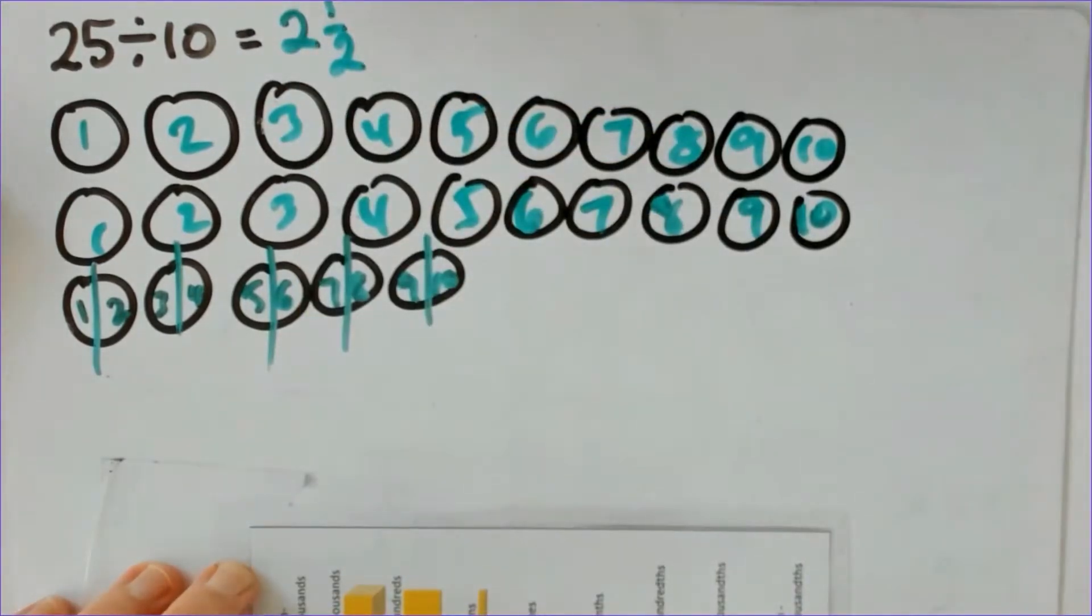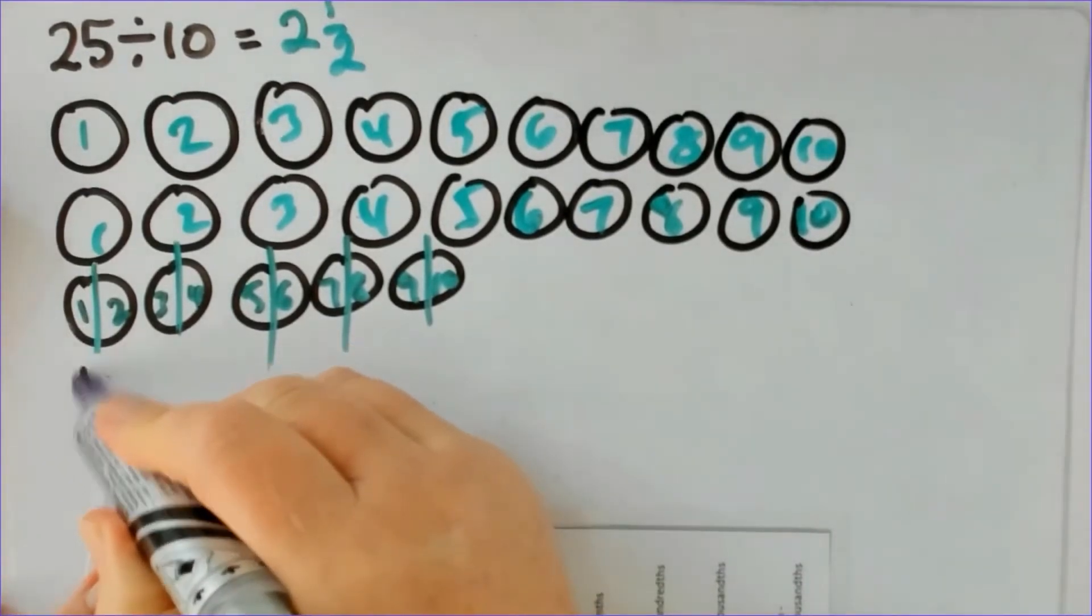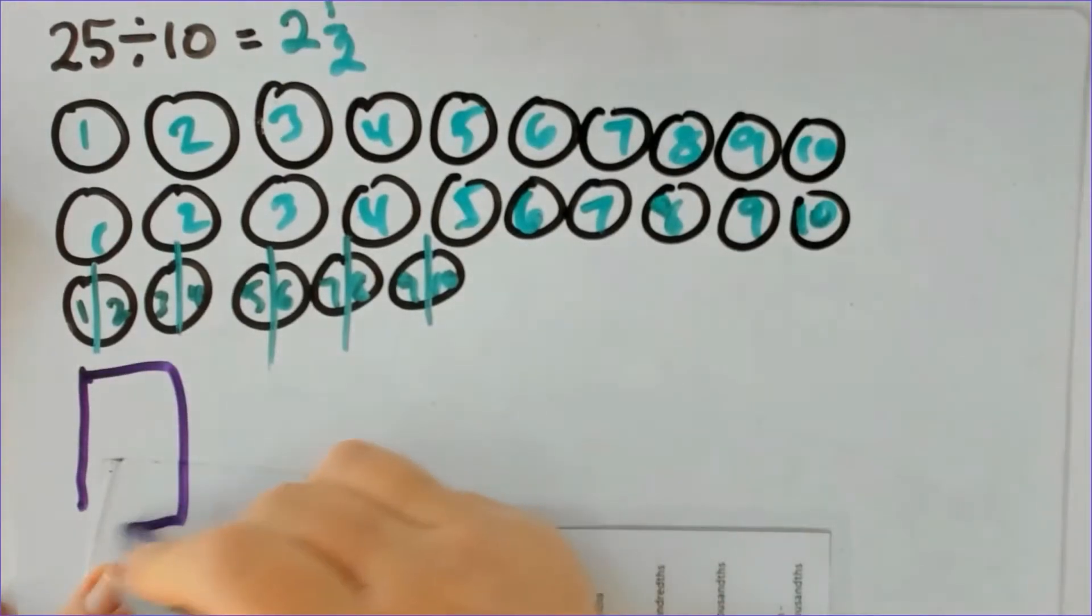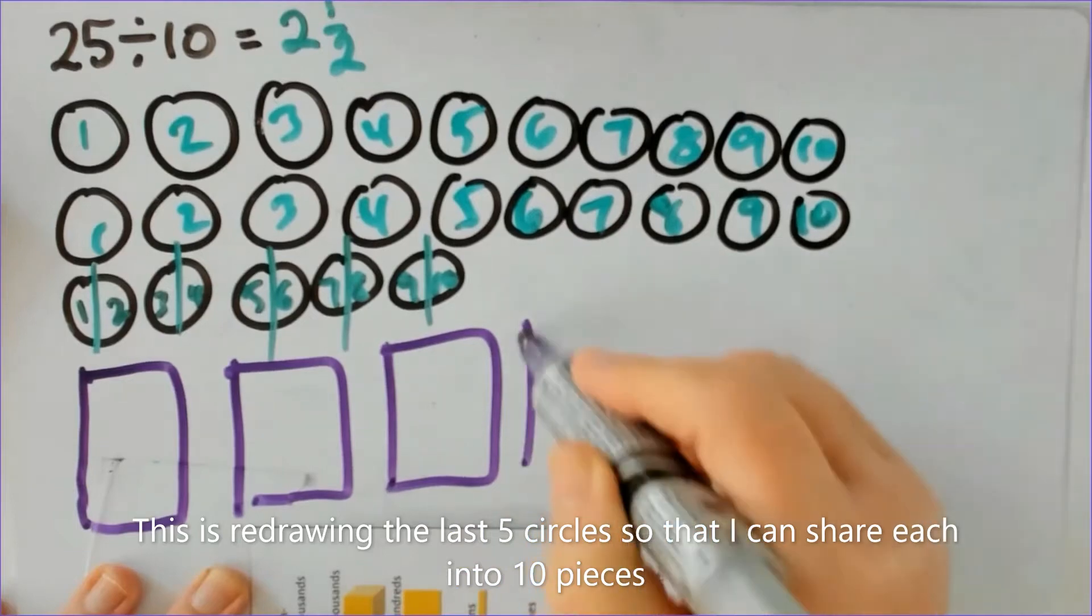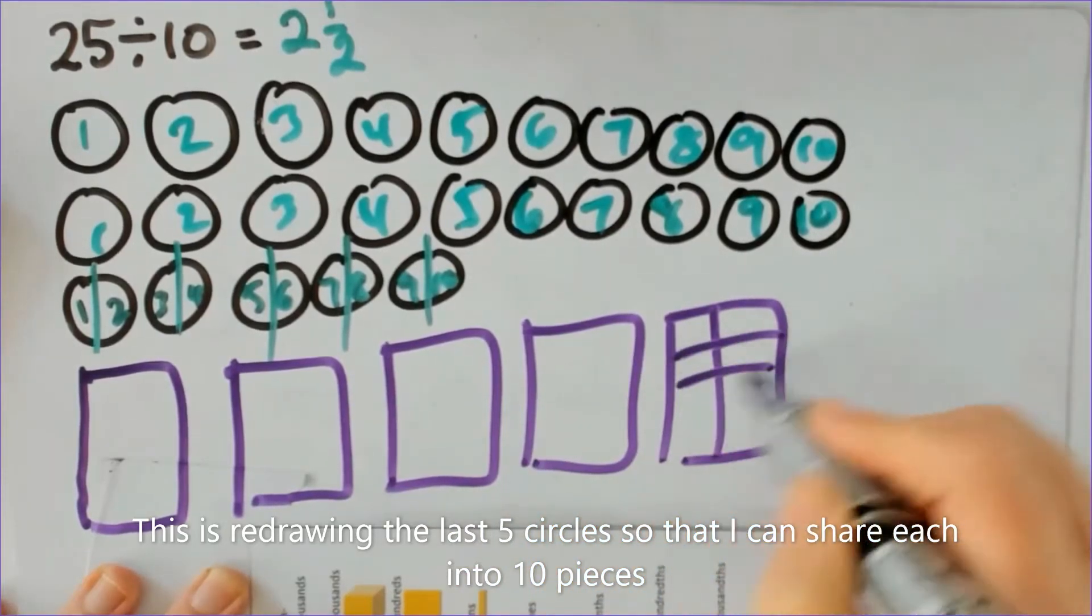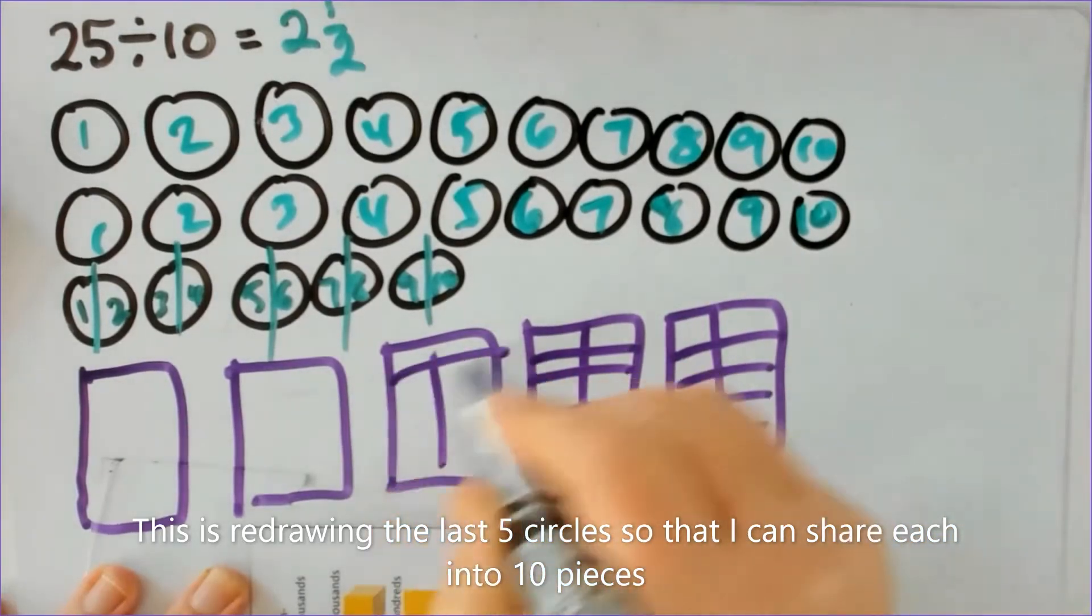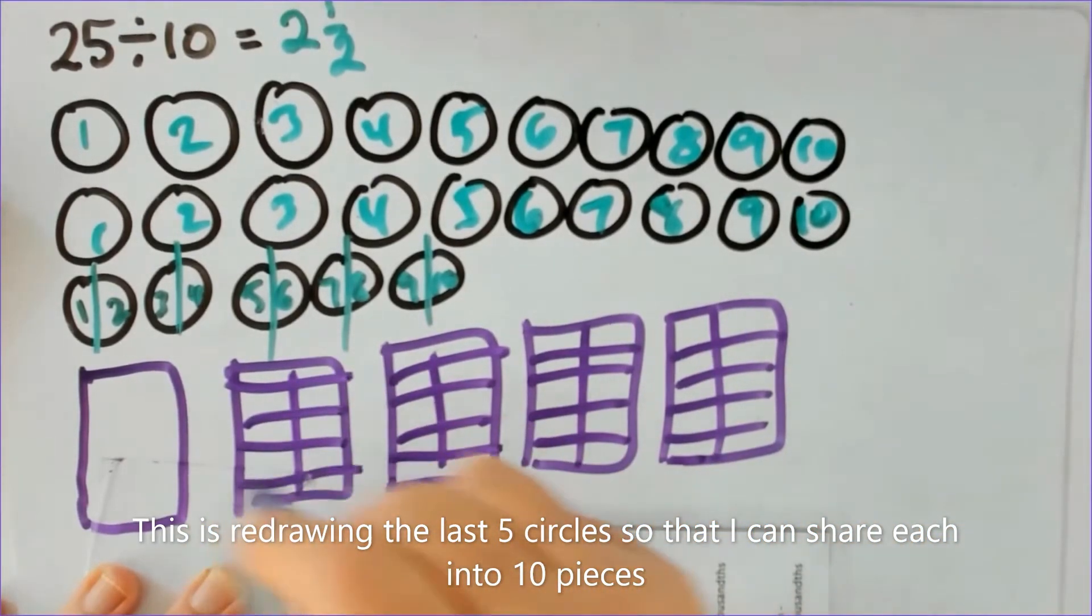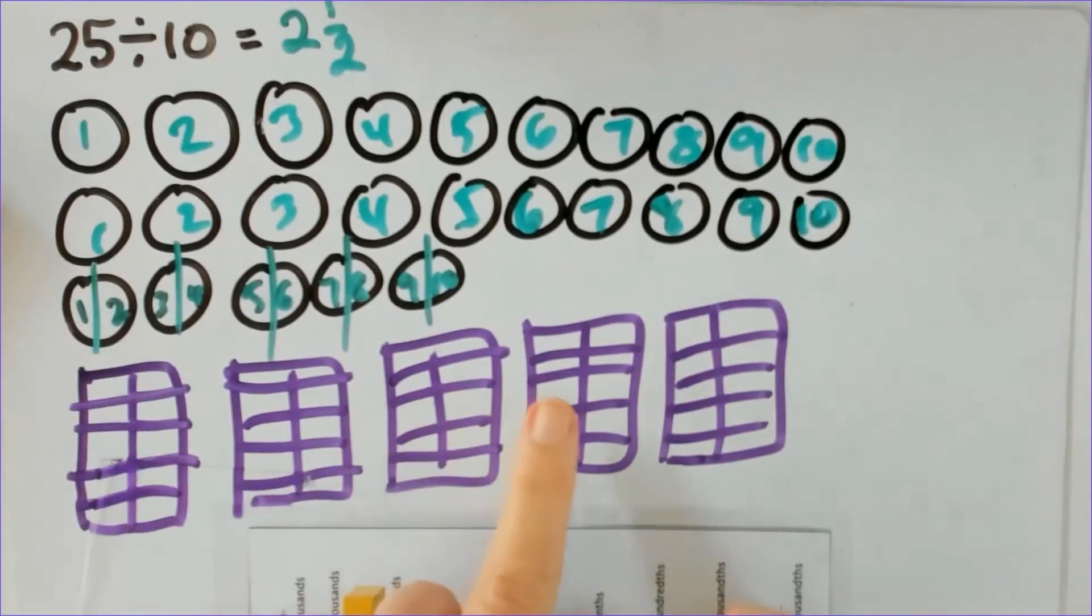But how does that help me with the decimal? So what if I redraw these last five pizzas and see if this fits: one two three four five. And what I'll say is okay so this is a vegetarian, margarita, chicken supreme, meat lovers and a Hawaiian pizza.